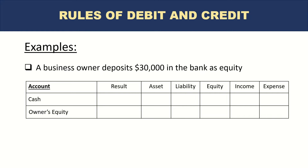This deposit will directly impact the equity of the business. So we have cash on one side and owner's equity on the other side. What is happening to cash? Because the amount is being deposited, it is increasing. What is happening to owner's equity? For the business, it is also increasing because the business had no equity before, and with this deposit the business now has equity — from zero to $30,000, there is an increase in equity.